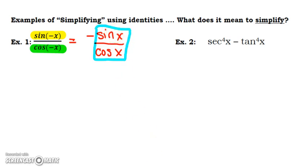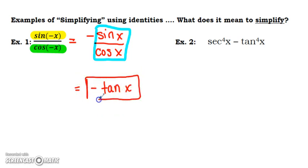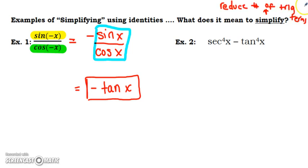Looking at this expression — sine over cosine — I know what that equals: it's a quotient identity, the sine over cosine is the tangent of x. So I keep the negative sign but change sine over cosine to tangent. The result is negative tangent of x. To simplify means to reduce the number of trig terms. We had two trig functions with negative angles; now we have one trig function with a positive angle. That's more simple.